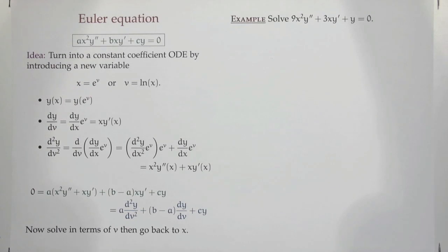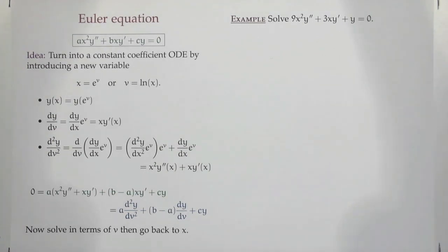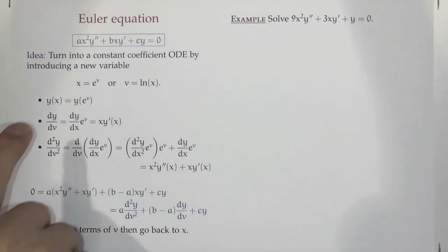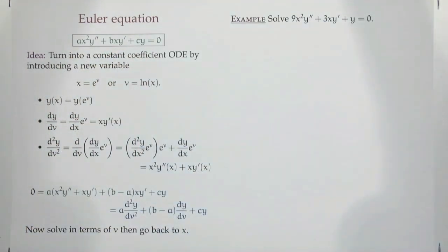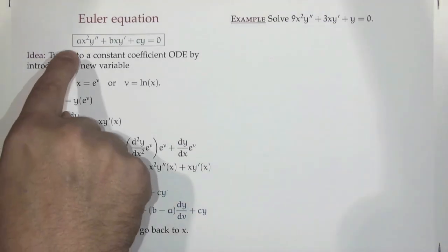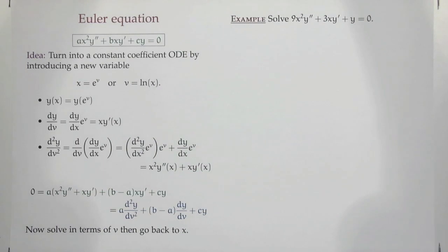Not everything we encounter has that form. The first thing we're going to talk about today is a differential equation that looks bad, but we can change it to be one that is nice for us. This is called the Euler equation: ax²y'' + bxy' + cy = 0. It's not constant coefficient — the reason is because the coefficients aren't constants. But the punchline is we can turn it into one.